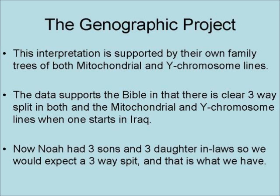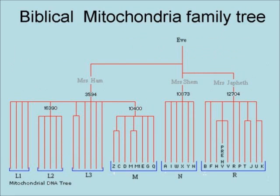Noah has three sons and three daughters-in-law, so we would expect a three-way split, and that is exactly what we have. This chart is derived from National Geographic's relationship and migration data. The three-way split expected from Noah's three daughters-in-law is clearly seen when one starts in Iraq. It is also possible, based on both map and family tree data, to show with a fair degree of probability which line came from which daughter-in-law. It also indicates that Mrs. Shem and Mrs. Japheth were more closely related to each other than they were to Mrs. Ham.